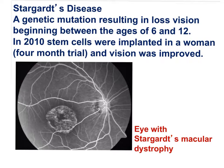Stargardt's disease results from a genetic mutation, causing loss of vision beginning between the ages of 6 and 12. In 2010, stem cells were implanted in a woman for a four-month trial, and vision was improved.